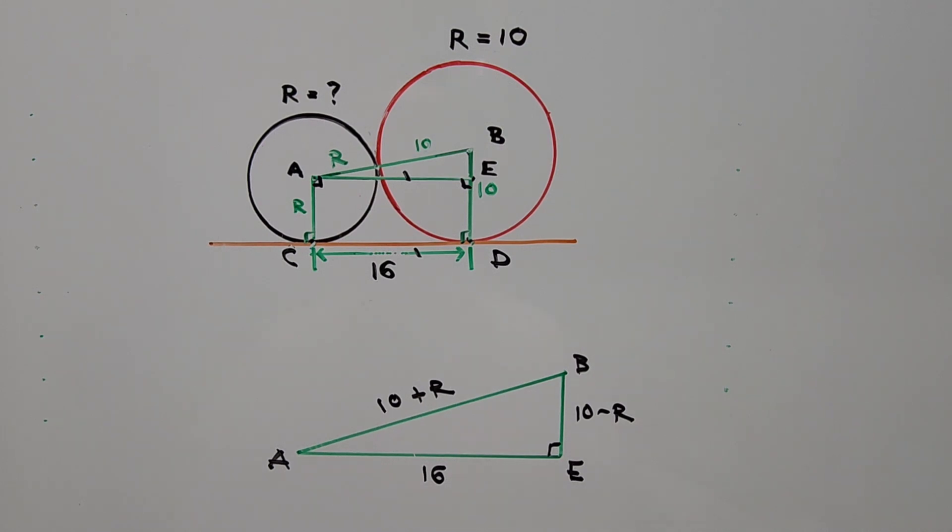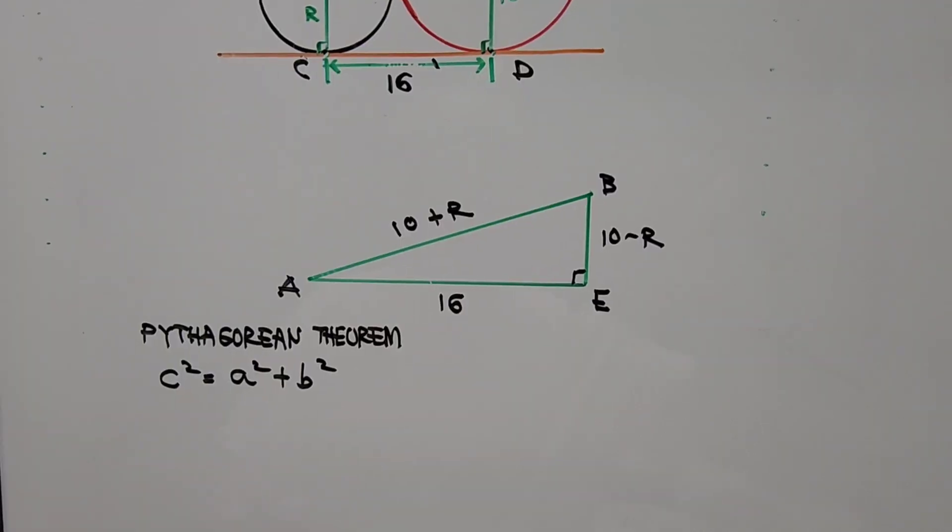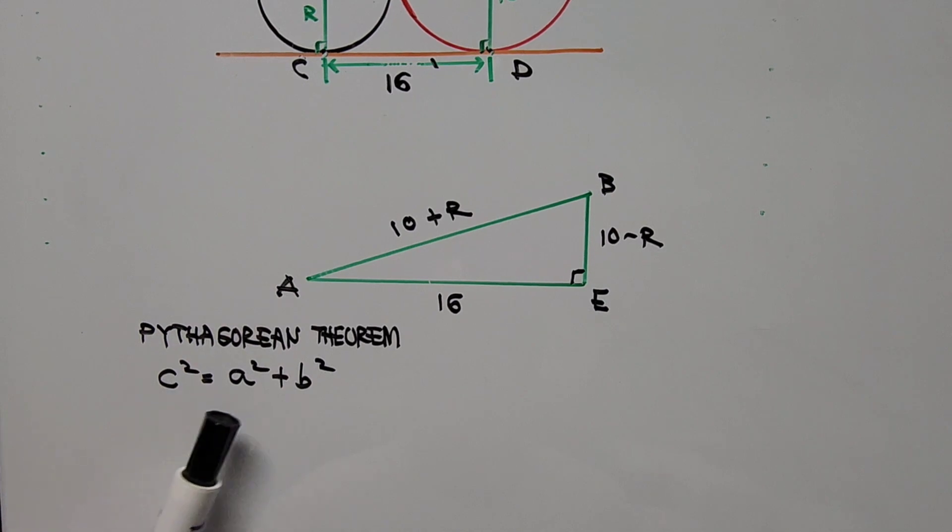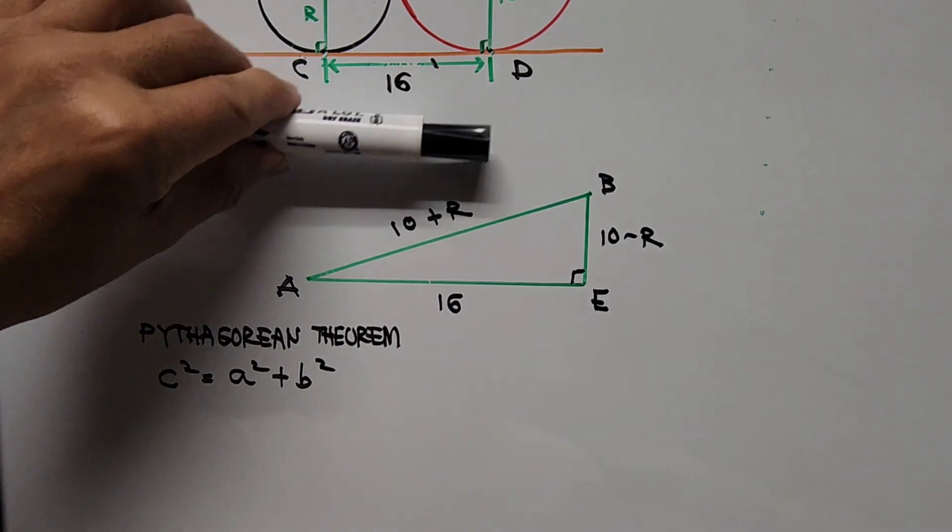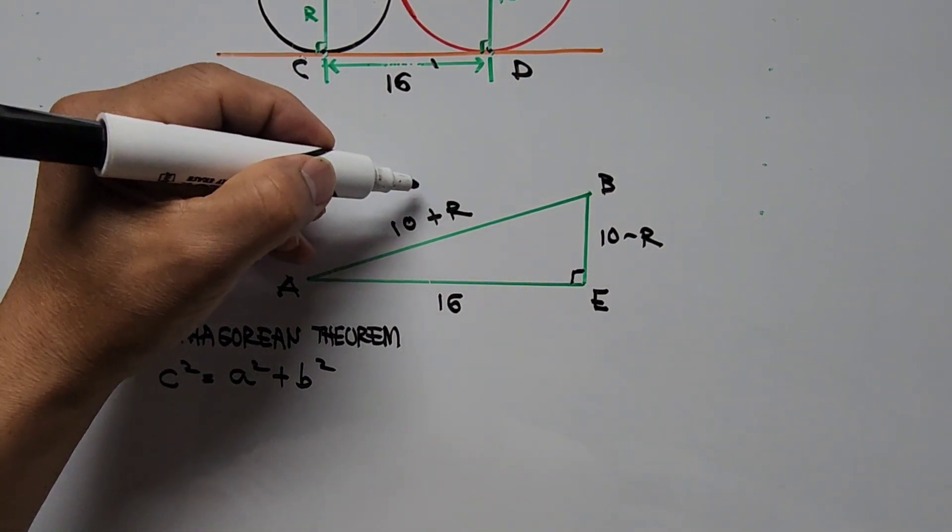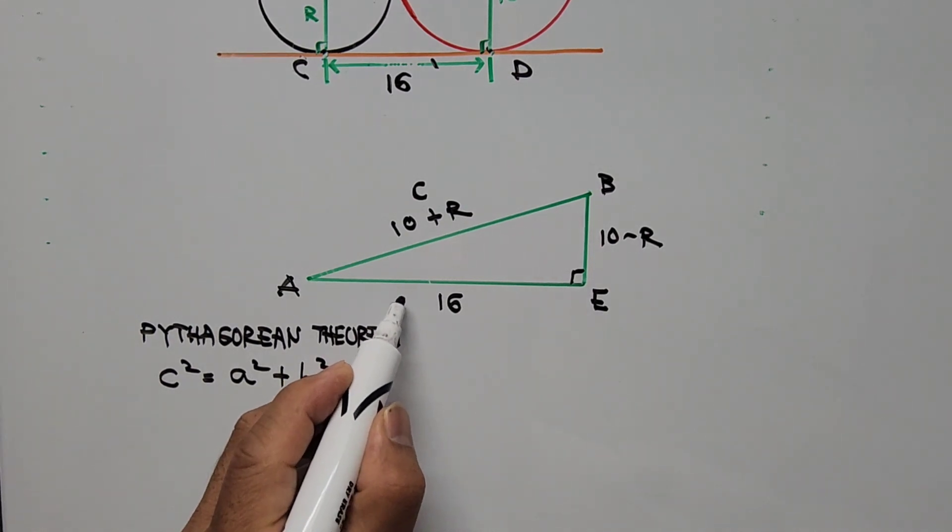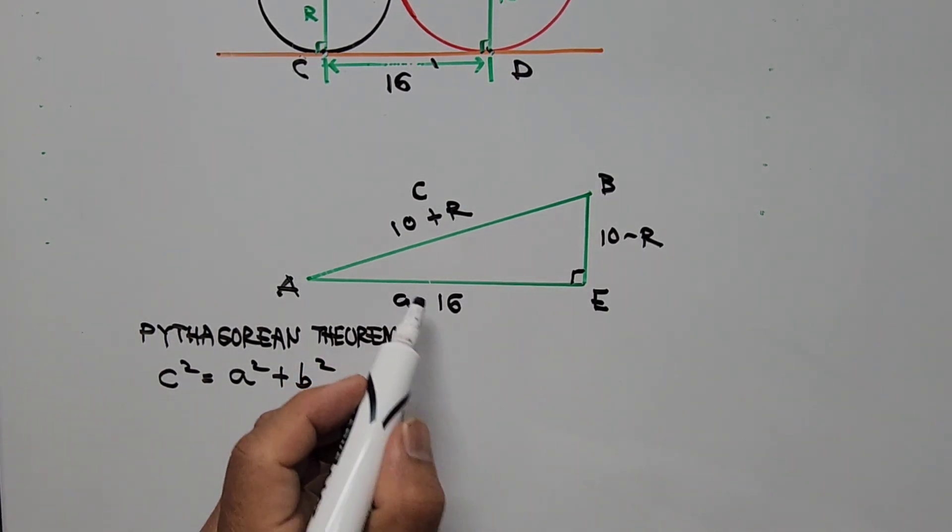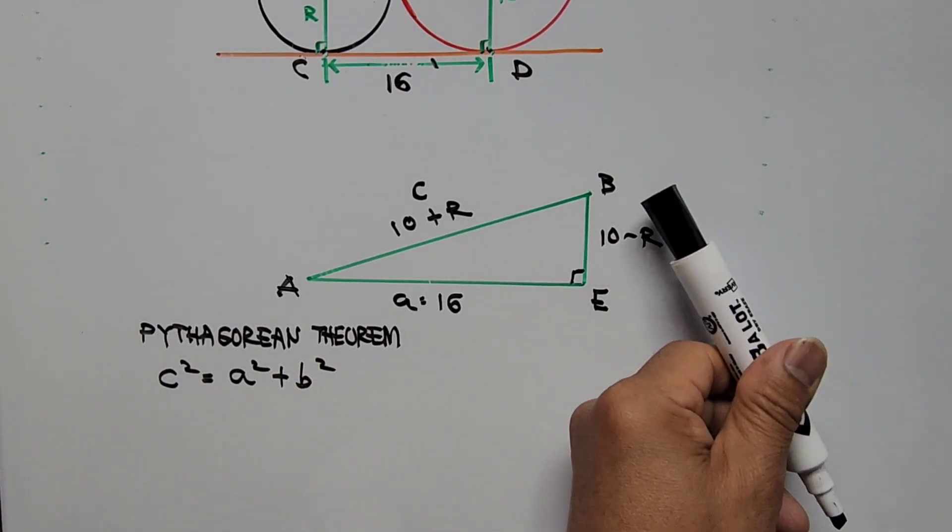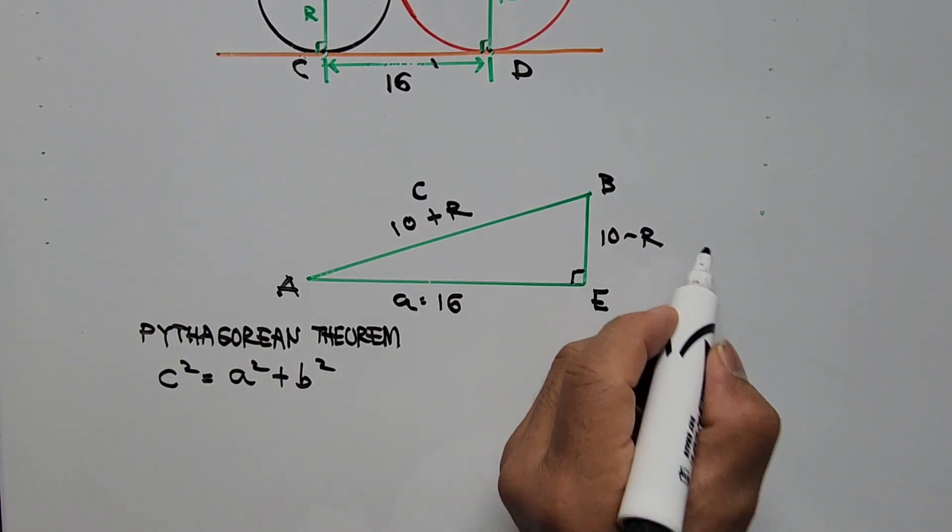So we can now use the Pythagorean theorem to find the value of R. From the Pythagorean theorem, we have the formula C squared equals A squared plus B squared, where C is the hypotenuse of the right triangle. We can designate this as side C, and AE we can designate as side A.